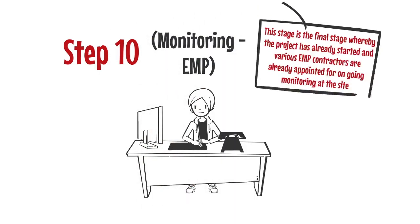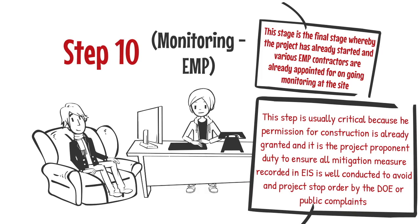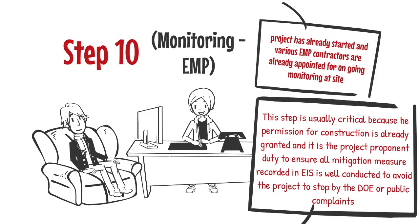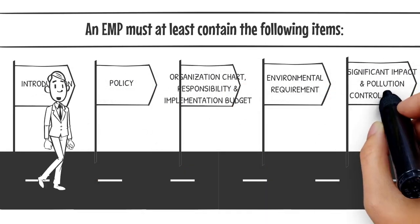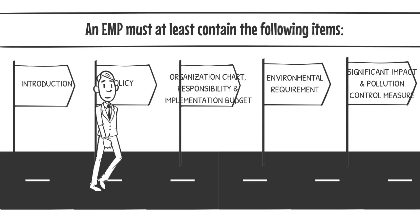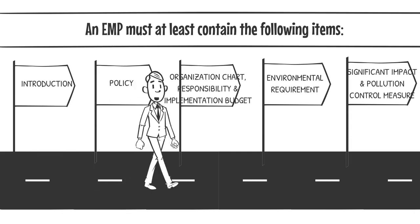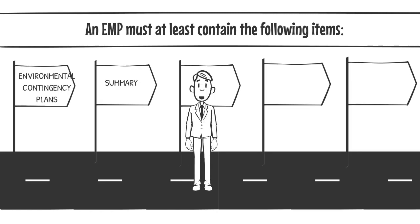Lastly, Step 10 is the monitoring or execution of the environmental management plan. This is the final stage whereby the project has already started and various environmental management plan contractors are already appointed for ongoing monitoring at site. This step is usually critical because the permission for construction is already granted, and it is the project proponent's duty to ensure all mitigation measures recorded in the environmental impact statement are well conducted, to avoid the project being stopped by the Department of Environment or due to public complaints. An environmental management plan must contain certain required items, and all environmental management plan contractors and consultants must follow the Department of Environmental EMP Reference Handbook.